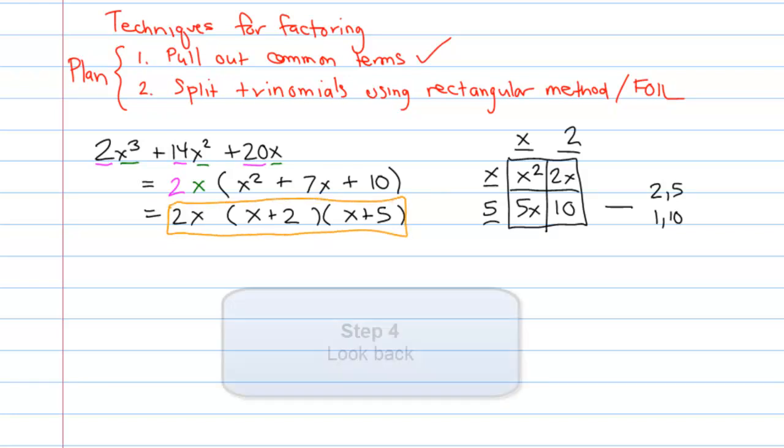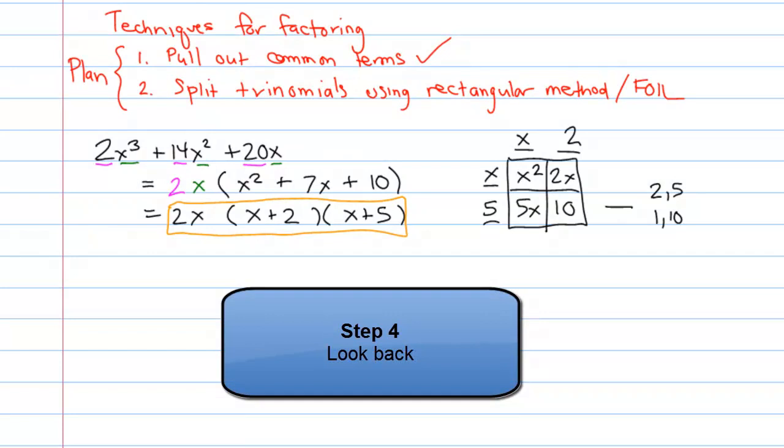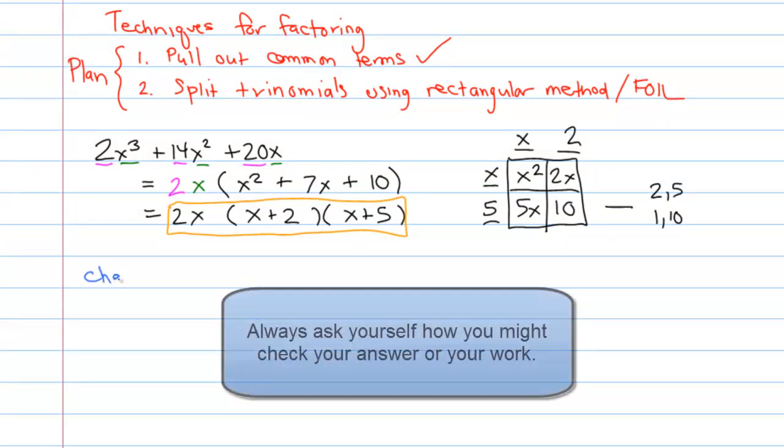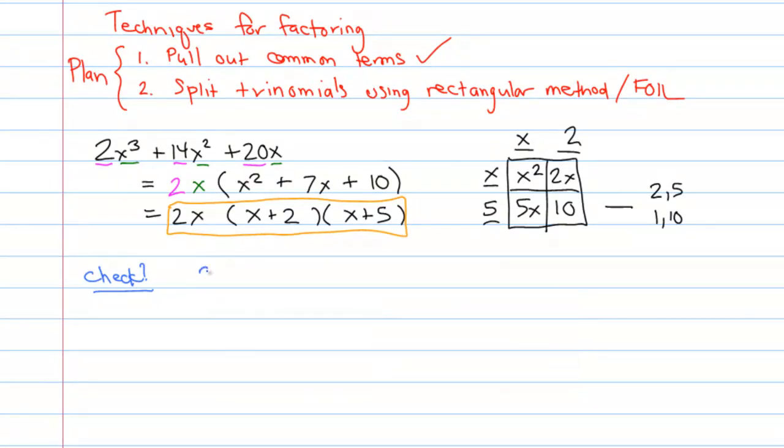But it's not the final step of the process. Step 4 in the Polya process is to look back at what we've done. For example, is there any way that we could check our work? Well since factoring is expressing a sum as a product, one of the ways to check it would be to simply expand the product out and to see whether or not we return to the original polynomial. So let me attempt doing that.